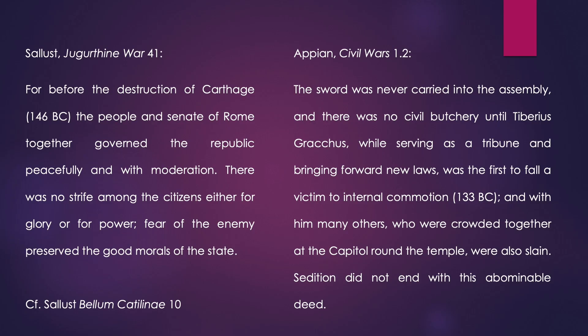For Appian, however, the internal degradation of the republic begins a few years later but still within the same period. For Appian it comes in 133 BC with the tribune Tiberius Gracchus: 'The sword was never carried in the assembly and there was no civil butchery until Tiberius Gracchus, while serving as tribune and bringing forward new laws, was the first to fall a victim to internal commotion, and with him many others who were crowded together at the capital round the temple were also slain. Sedition did not end with this abominable deed.' What we see from both Sallust and Appian is some sort of consensus as to the point at which the Roman republic starts to decline. And this is the period of the late republic beginning in the second century BC — a period defined by crisis and breakdown.